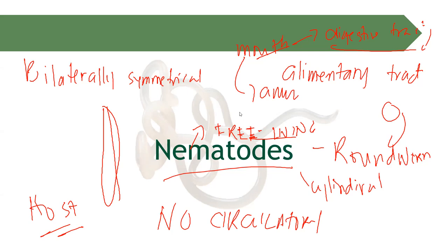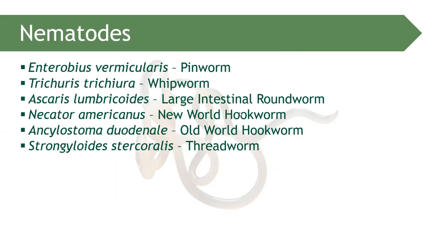There are three morphological life cycle stages of our nematodes: the adult, the larvae, and the egg. There are 500,000 species of nematodes and counting across the world. All of these 500,000 nematodes are considered pathogenic — capable of causing parasitic infections to animals and to plants.